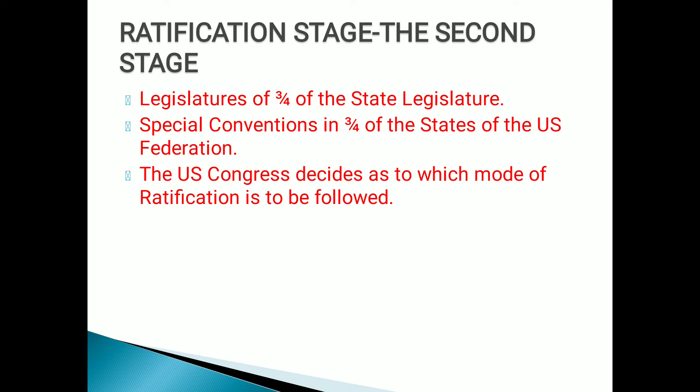An amendment proposal which successfully passes the two stages does not require the presidential signature. While sending an amendment for ratification by the states, the Congress fixes the mode of ratification and can also fix a time limit within which the states have to give their ratification verdict. If a state ratifies an amendment, it cannot withdraw its approval at a later date. However, if a state first refuses to approve the proposed amendment, it can later revise its verdict and ratify the same. An amendment made in the constitution can be rejected by the Supreme Court in a judicial review, when the Supreme Court finds the amendment unconstitutional.